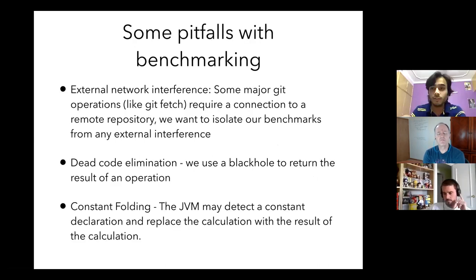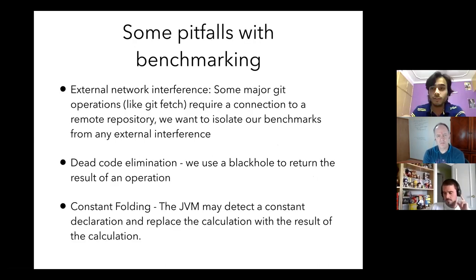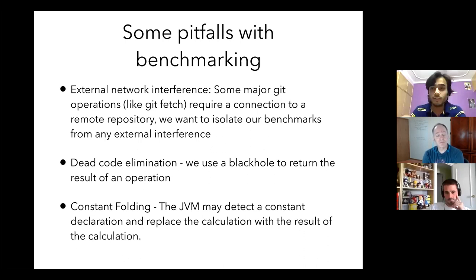First: we don't want any external network interference, because most git operations require an external connection and we want to isolate our benchmark. Second is dead code elimination — if I'm not returning anything from a benchmark, the JVM might optimize it away, giving a false perception that code is running faster. JMH provides the concept of a blackhole: you consume whatever you're returning, tricking the JVM into thinking an object is being returned from the function.